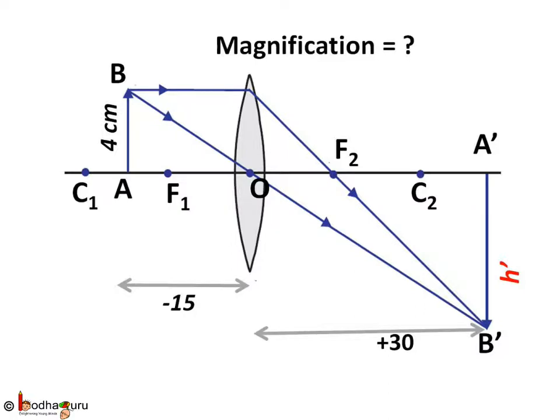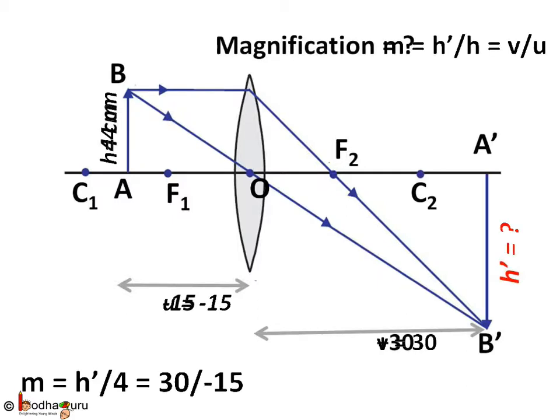Height of object AB is 4 cm and say height of image A'B' is H'. We know the formula of magnification M is equal to H' by H is equal to V by U.